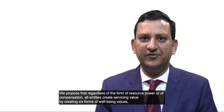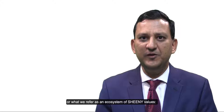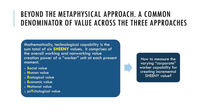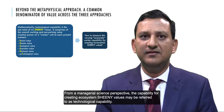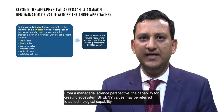We propose that regardless of the form of resource power or of compensation, all entities create servicing value by creating six forms of well-being values, or what we may refer to as an ecosystem of SHEENY values: S for Social, H for Human, E for Ecological, E for Economic, N for National, and Y for Psychological. In applied economics, a model for creating value is known as a technological model. From a managerial science perspective, the capability for creating ecosystem SHEENY values may be referred to as technological capability.